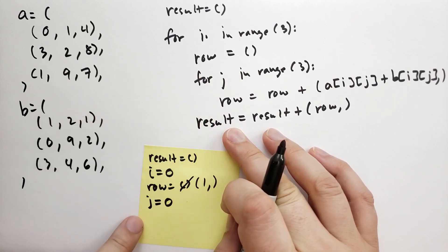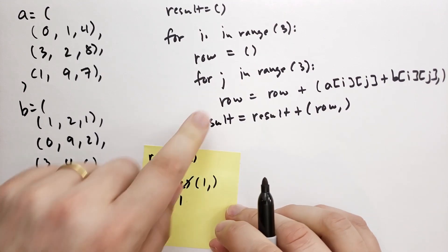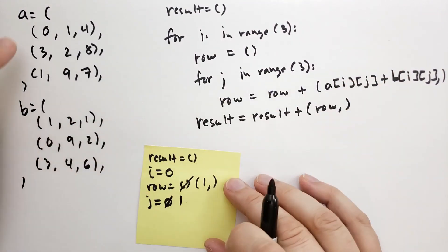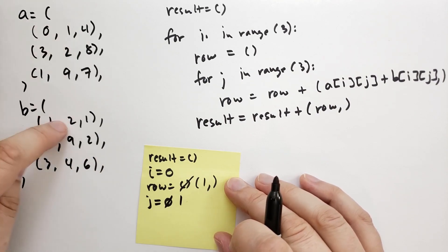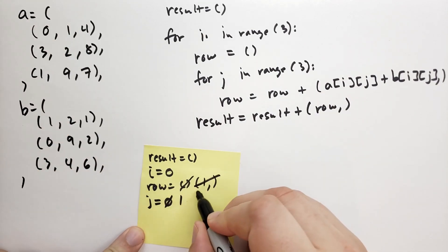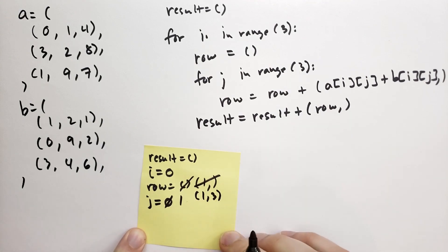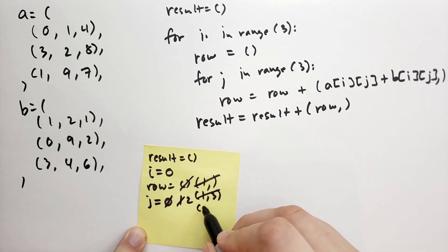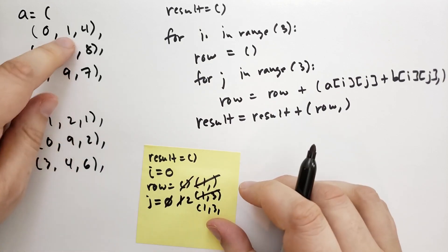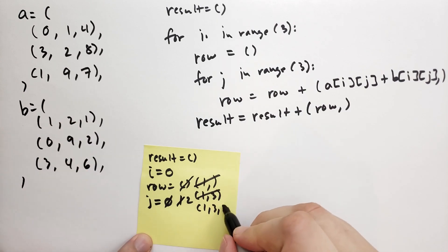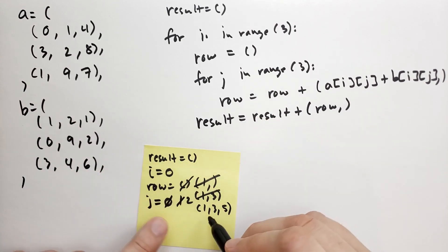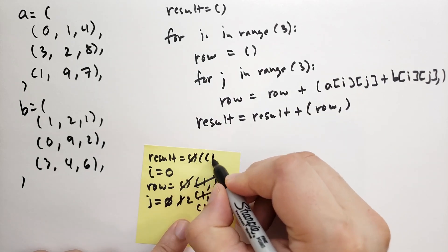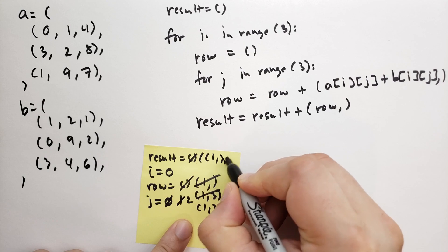We grab the next value for j, which is 1, and extend the row by a[0][1] plus b[0][1]: 1 plus 2 equals 3, so row becomes (1, 3). Then j equals 2, and we extend once more: a[0][2] plus b[0][2] is 4 plus 1 equals 5, so row becomes (1, 3, 5). Finally we extend the result by adding the tuple (1, 3, 5), so result is now ((1, 3, 5),).